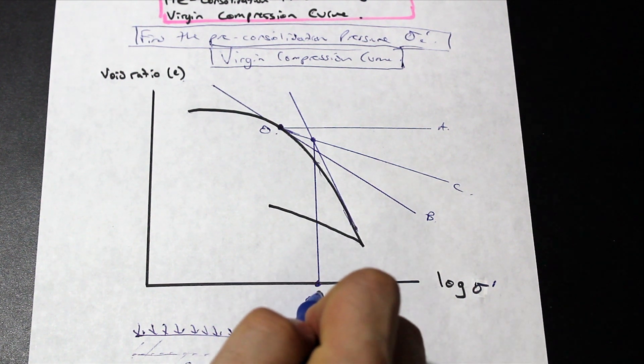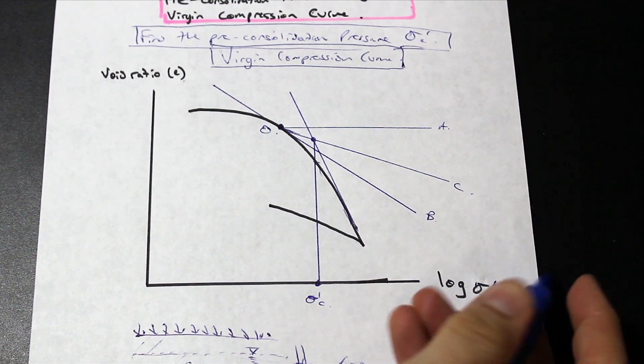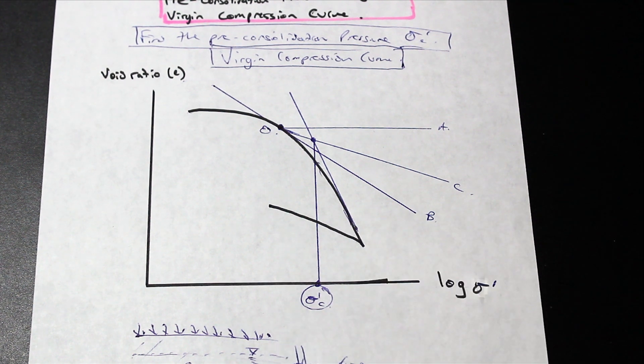Is the pre-consolidation pressure sigma prime C. All right, so there you go.